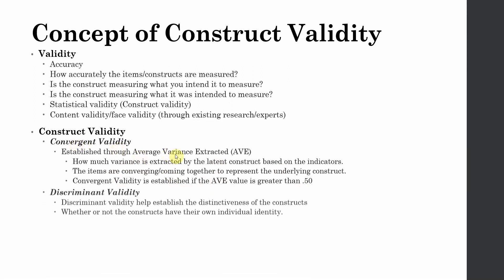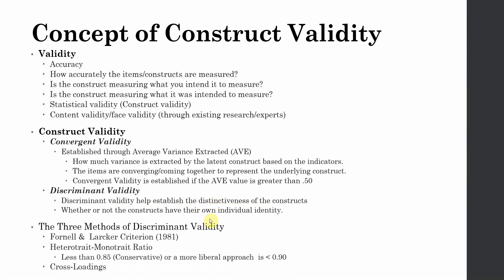The other form of validity is discriminant validity. Now since we have got multiple constructs in this study, there is a need to establish discriminant validity because it helps you establish the distinctiveness of constructs. Whether or not the constructs in your study have got their own individual identity.